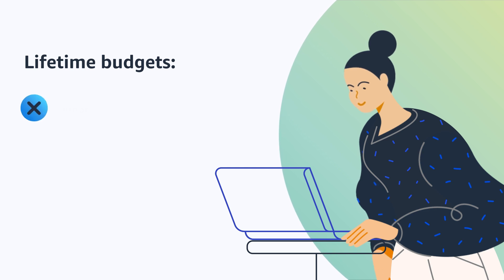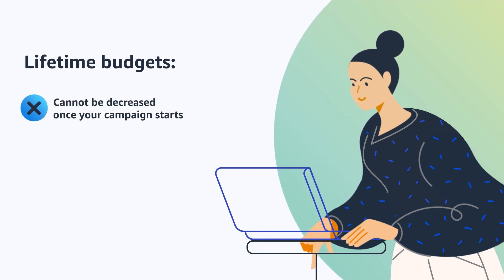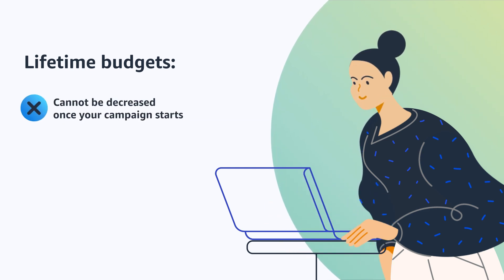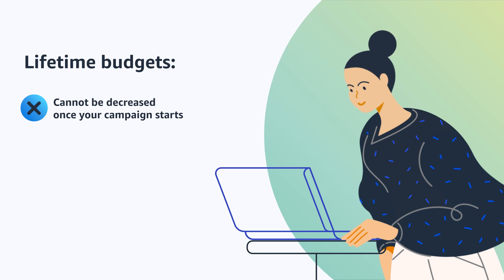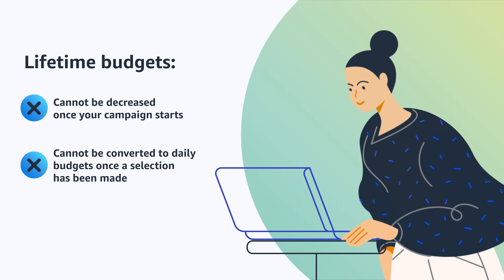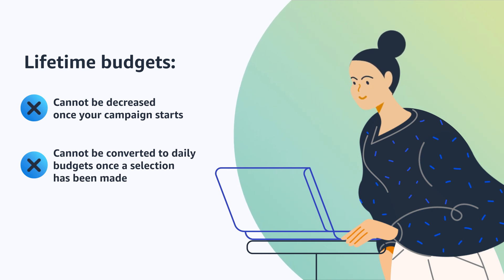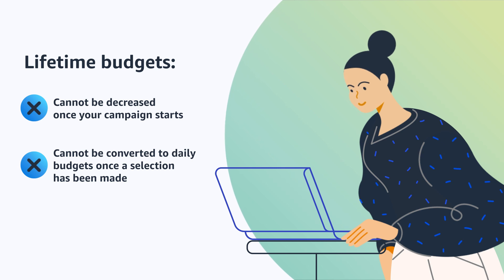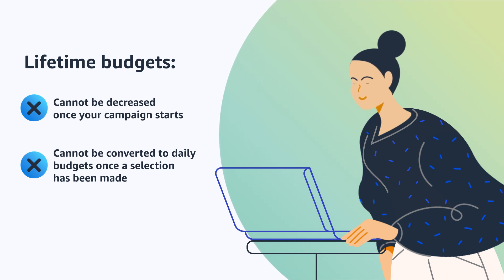It's important to remember that lifetime budgets cannot be decreased once your campaign starts. Be sure to set the correct lifetime budget before you kick off your campaign to ensure you're making the right investment. Also note that you won't be able to switch between a daily budget and a lifetime budget after you've selected one. To change your budget for an active campaign, copy your campaign and create a new campaign with the revised budget.